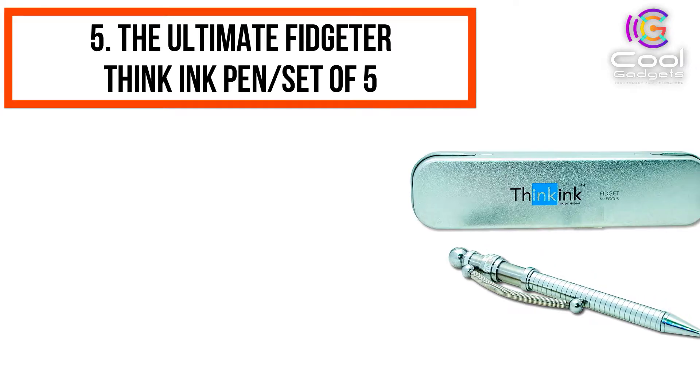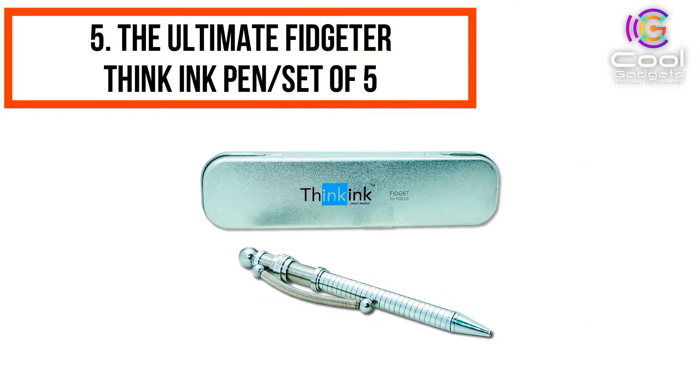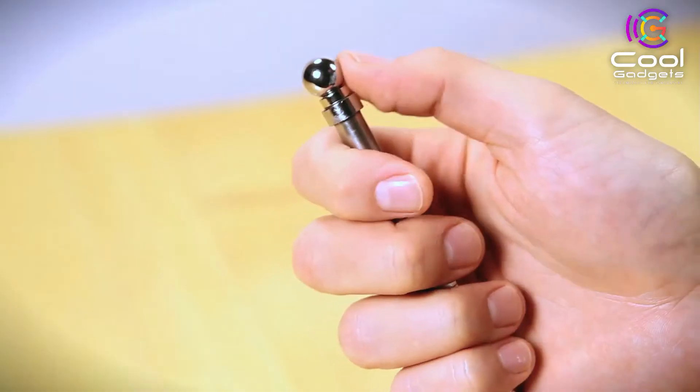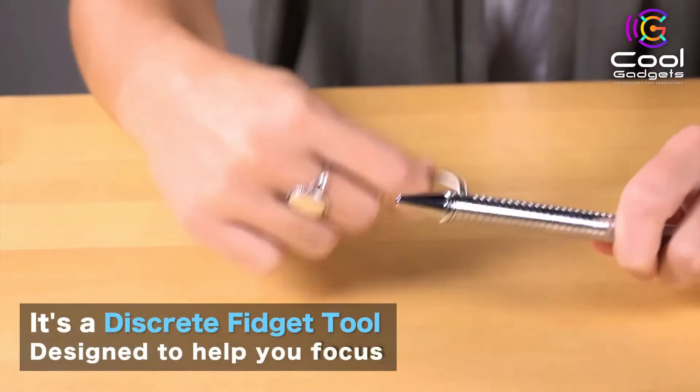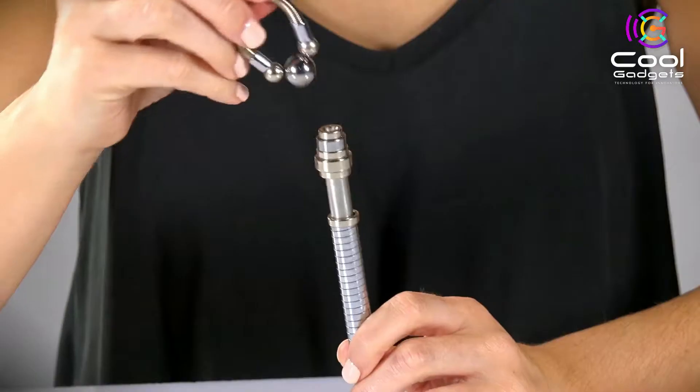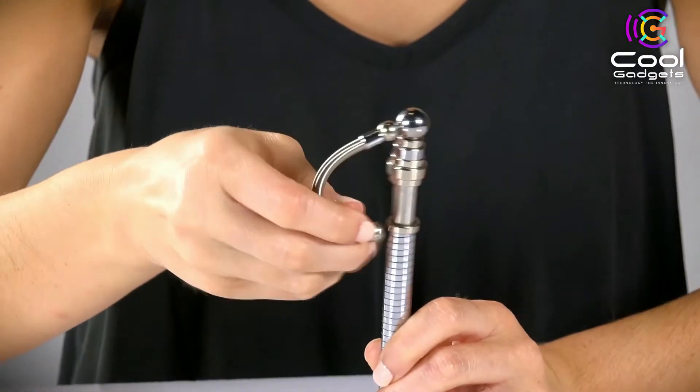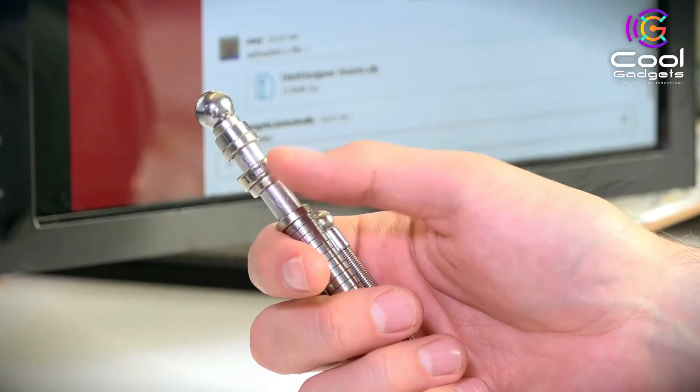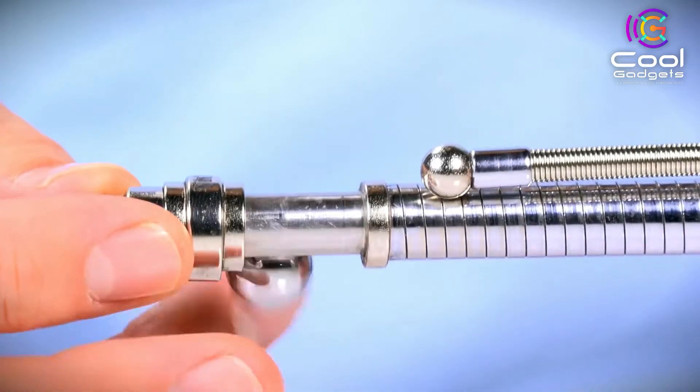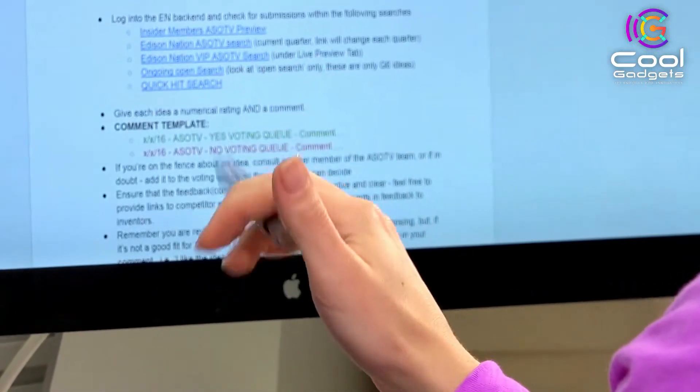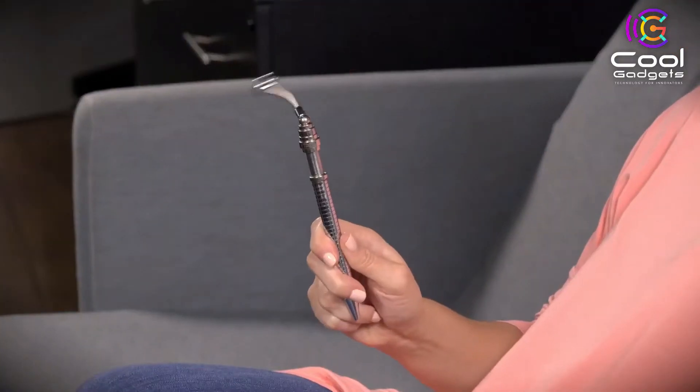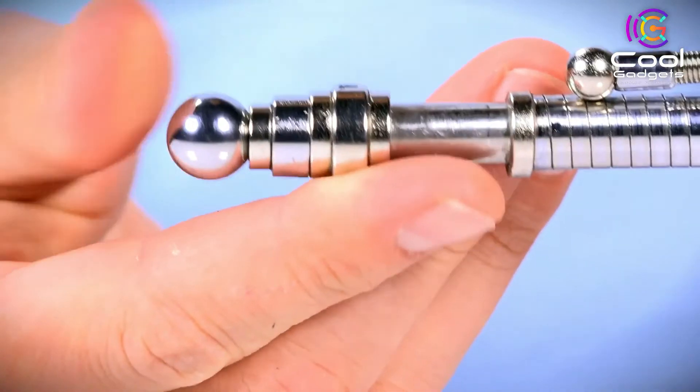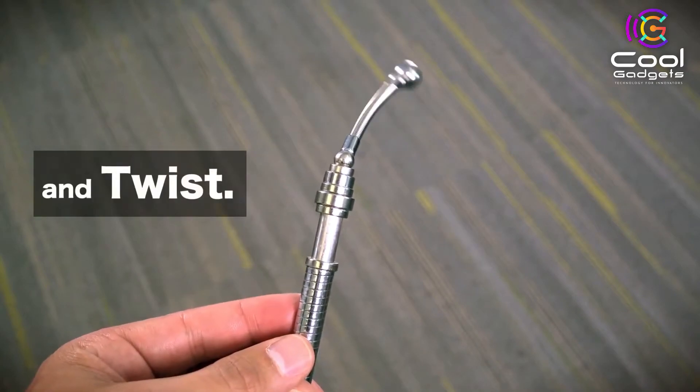Number 5: Ultimate Fidgeter Think Ink Pen Set of Five. The Ultimate Fidgeter Get Set features five unique focus tools: the Think Ink Pen, the Nutty Buddy Fidget Slider, the Slip and Slide Fidget Slider, the Lil Thinker Fidget Slider, the ThinkWell Desk Toy, and two extra ink refills. The set also comes in two metal gift tins. The Think Ink Pen is the first chrome-plated steel pen that bends, spins, and transforms into various creative, fidgety features.